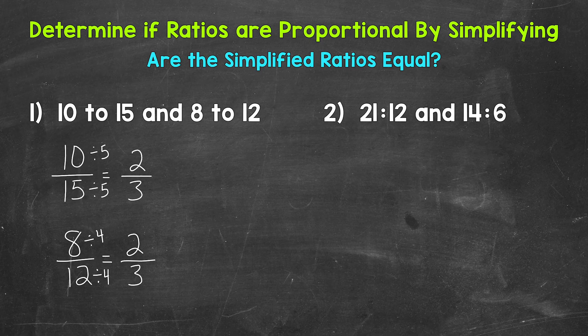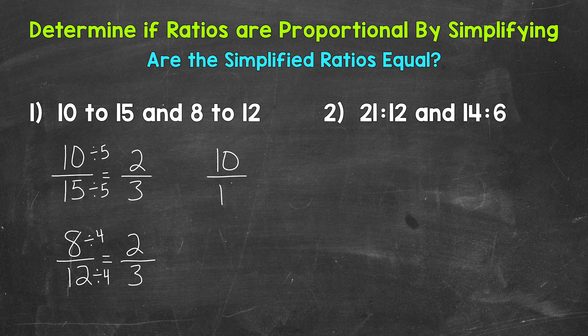So both of our ratios, 10 to 15 and 8 to 12, simplify to 2 to 3. Since they simplify to the same ratio, they are proportional. So we can set them up as equal to each other and write them as a proportion. 10 to 15 is equal to, or proportional to, 8 to 12.